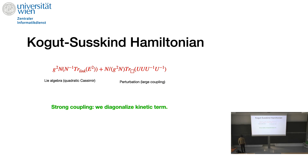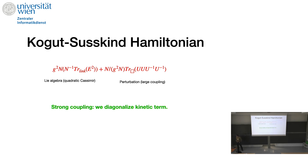We'll do the strong coupling expansion. Strong coupling means G²N is big, so 1/G²N is small — you throw away the plaquettes and just keep the electric term. One of the reasons to do this nowadays has to do with quantum computers, because this is easy to diagonalize. The presentation on quantum computers is easier starting from this side — the strong coupling expansion — and then we diagonalize the first term.